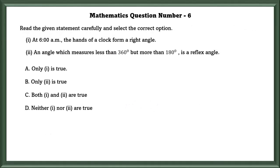Mathematics Question No. 6: Read the given statement carefully and select the correct option. Now we will see each statement. First statement. At 6 AM, the hands of a clock form a right angle. No. The hands of a clock form a straight angle, not a right angle.